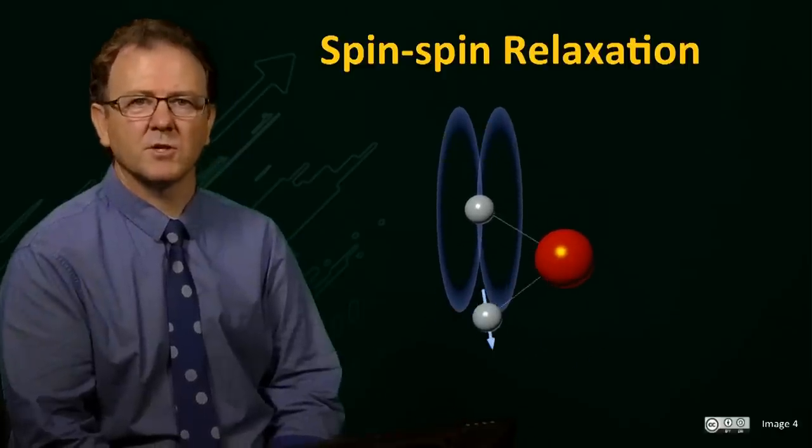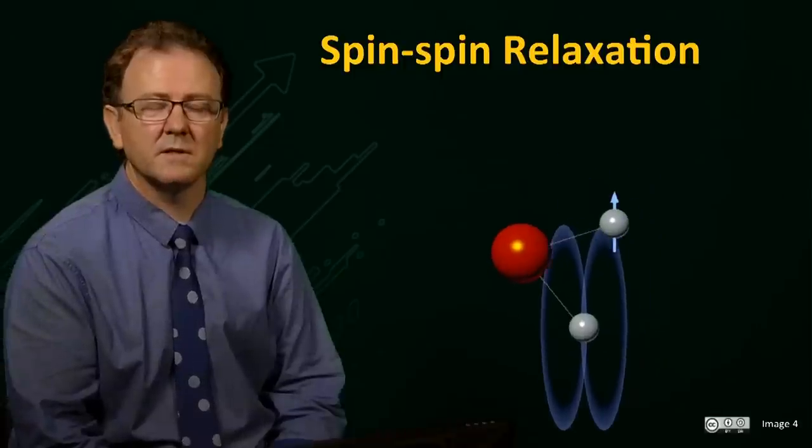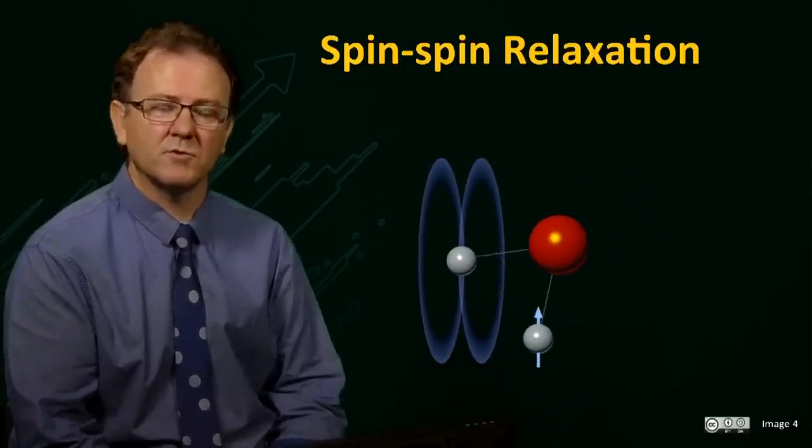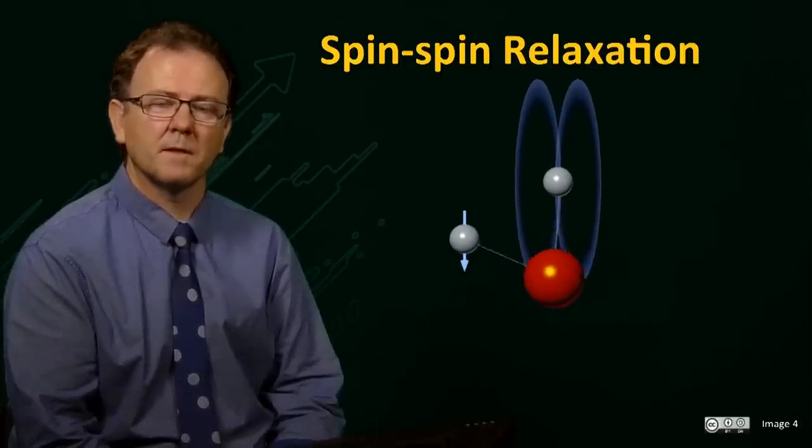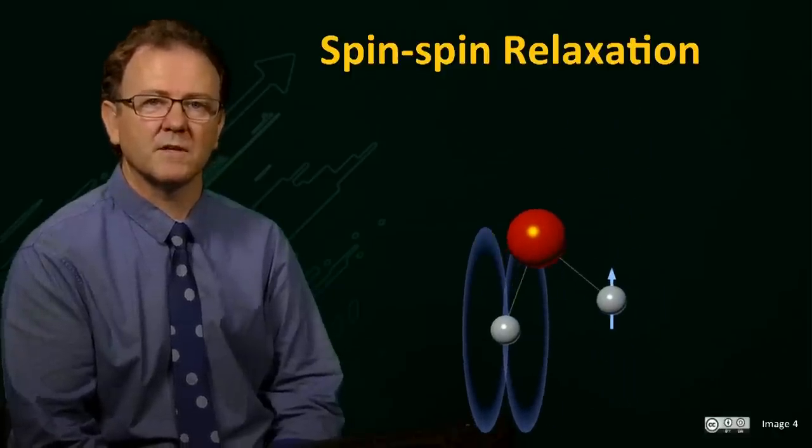If the fluctuations occur at a rate that approaches the Larmor frequency of the second spin, then that spin may be excited, and an energy level transition may occur. This process is important for T1 relaxation, which we discuss in the next section.